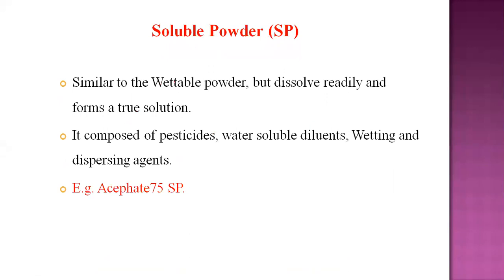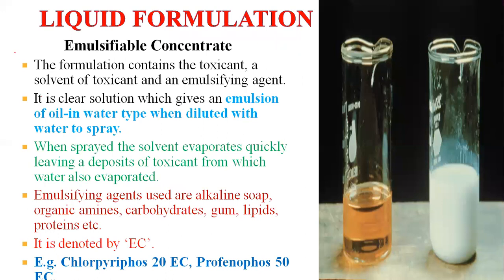Soluble powder is similar to wettable powder but dissolves readily and forms a true solution. These pesticides are composed with water-soluble diluents and other wetting and dispersing agents. An example of this pesticide formulation is acephate 75 SP.